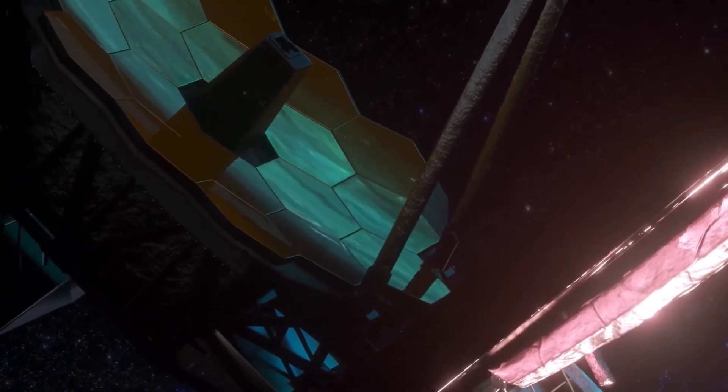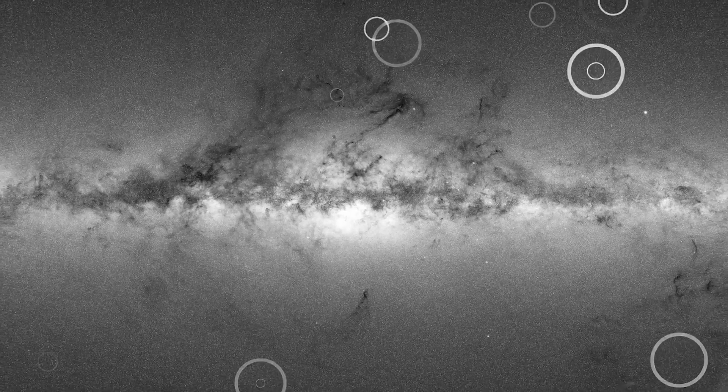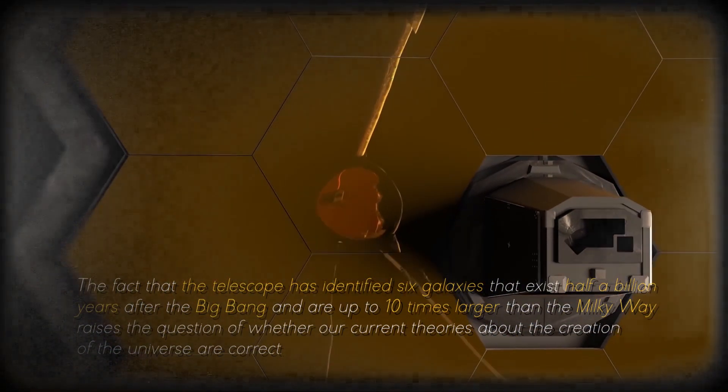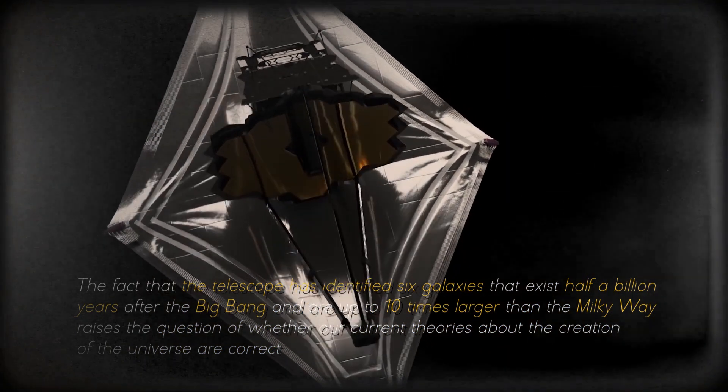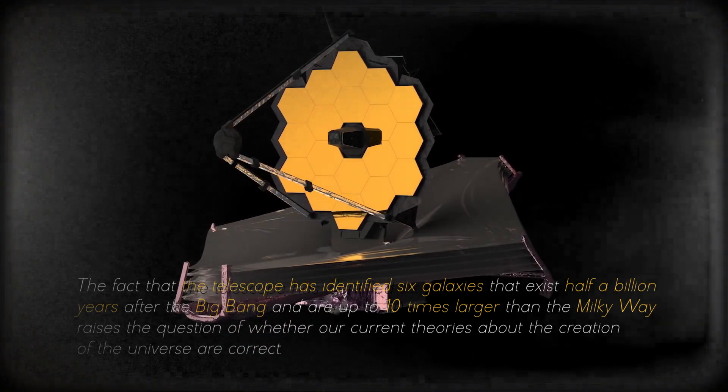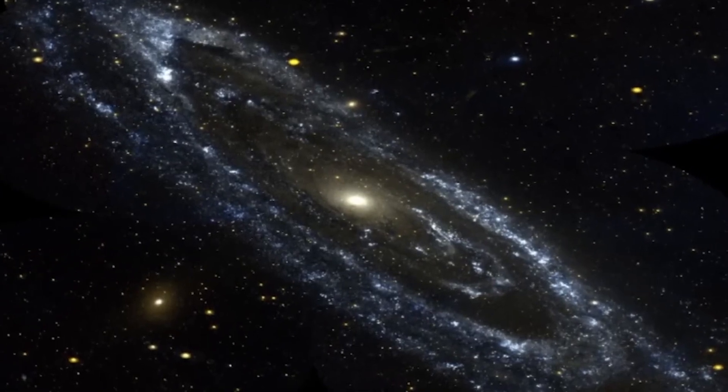According to theoretical physicist Michio Kaku, the discovery of ancient galaxies by the James Webb Space Telescope is called into question everything we knew about the beginning of the universe. Previously, these galaxies were thought to be less developed than the Milky Way, but the new findings suggest that we may be missing crucial information. The fact that the telescope has identified six galaxies that exist half a billion years after the Big Bang and are up to ten times larger than the Milky Way raises the question of whether our current theories about the creation of the universe are correct. Kaku explained that it takes billions of years to create a galaxy like the Milky Way, so it is strange to find such large, young, primordial galaxies. This discovery may require us to revise and rewrite textbooks on the beginning of the universe.